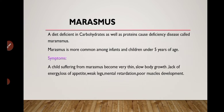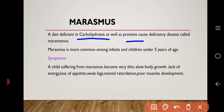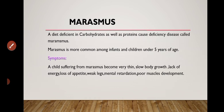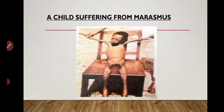A diet deficient in both carbohydrates and protein causes marasmus. Marasmus is more common among infants and children under five years of age. Symptoms are: the child becomes very thin, with slow body growth, lack of energy, loss of appetite, weak legs, mental retardation, and poor muscle development. Here you can see an image of a child suffering from marasmus.